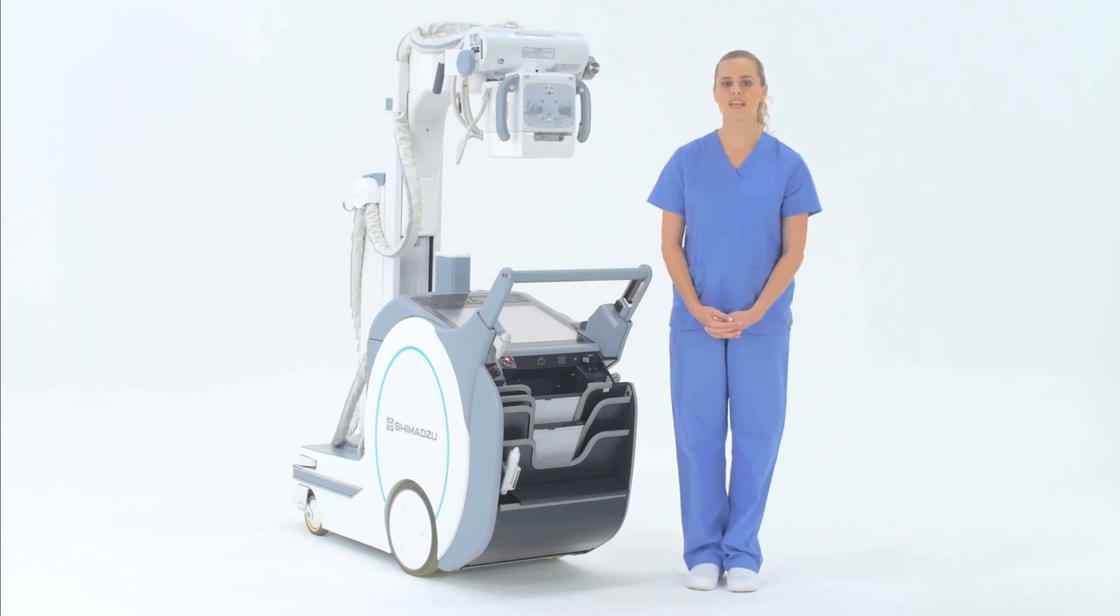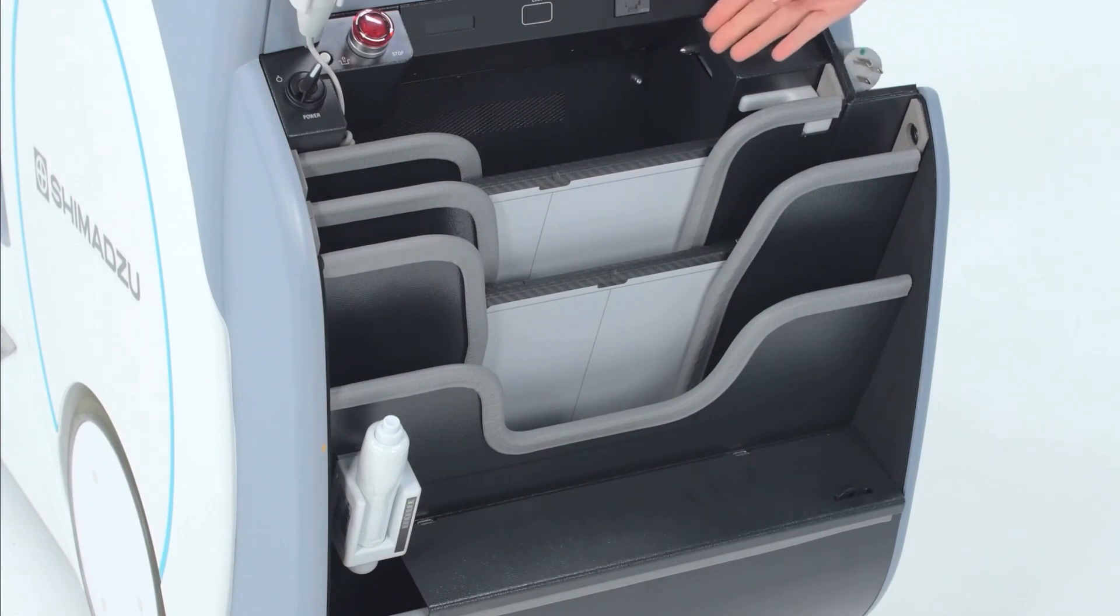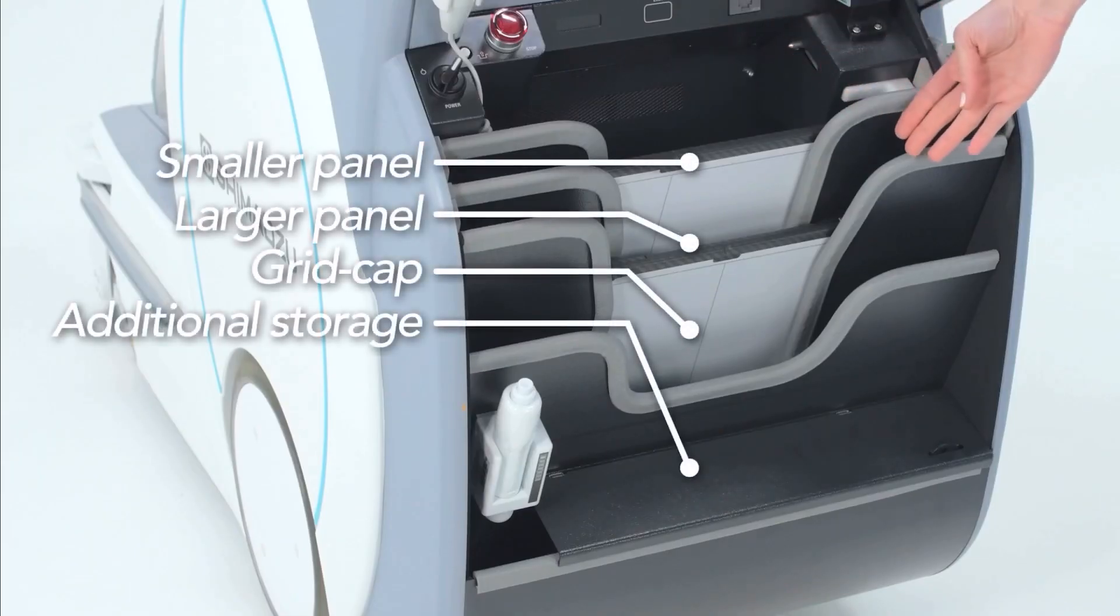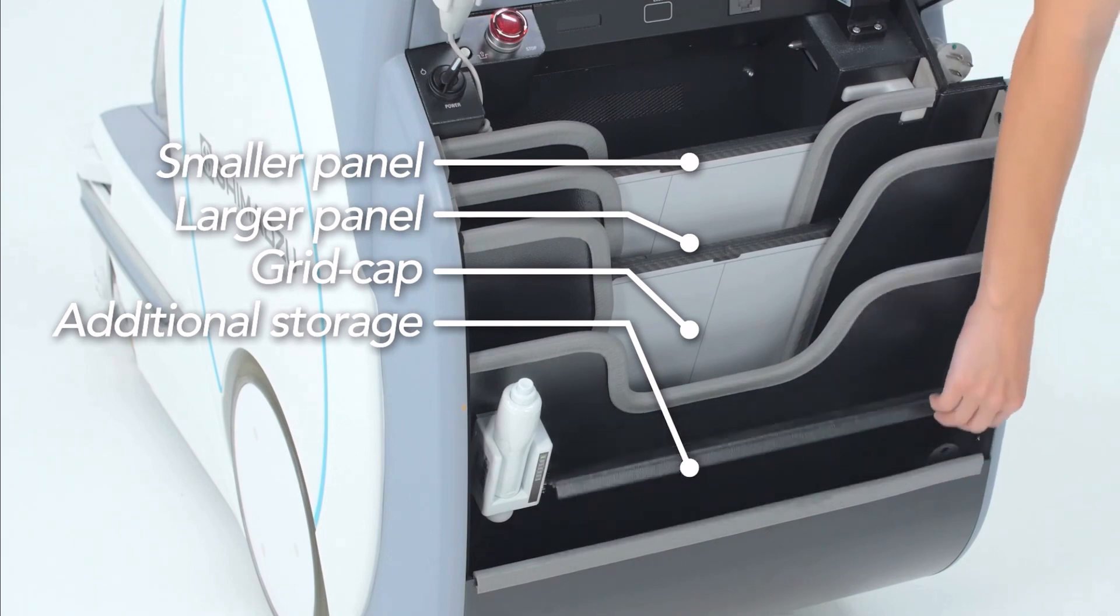Storage on the back of the unit has been upgraded to provide a space for paperwork and a charging cable for the panels. There are then slots sized to accommodate a smaller panel, a larger panel, and your grid cap. At the bottom there is a compartment for additional storage.